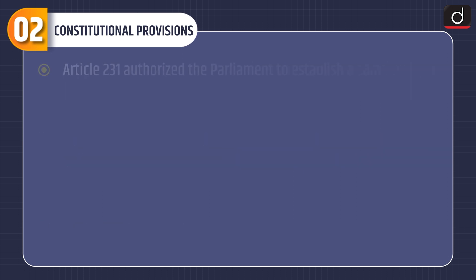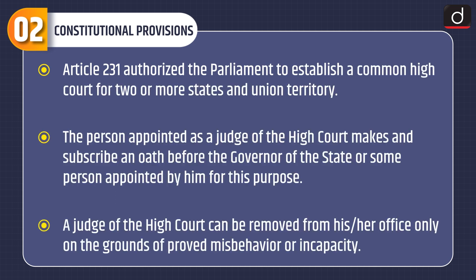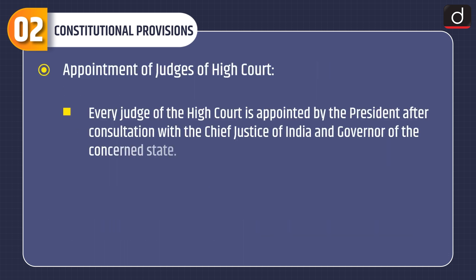Article 214 of the Constitution states there shall be a High Court for each state. Article 231 authorizes the Parliament to establish a common High Court for two or more states and Union territory. The person appointed as a judge of the High Court makes and subscribes an oath before the Governor of the state. A judge of the High Court can be removed from office only on the grounds of proved misbehavior or incapacity.